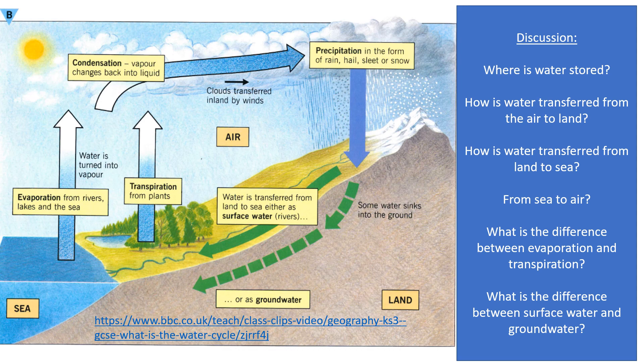Next question: how is water transferred from land to sea? When rain or precipitation falls on the ground it might do two main things. It might flow over the surface through surface water flow like rivers or surface runoff, or it might infiltrate into the ground and travel to the sea by groundwater flow.